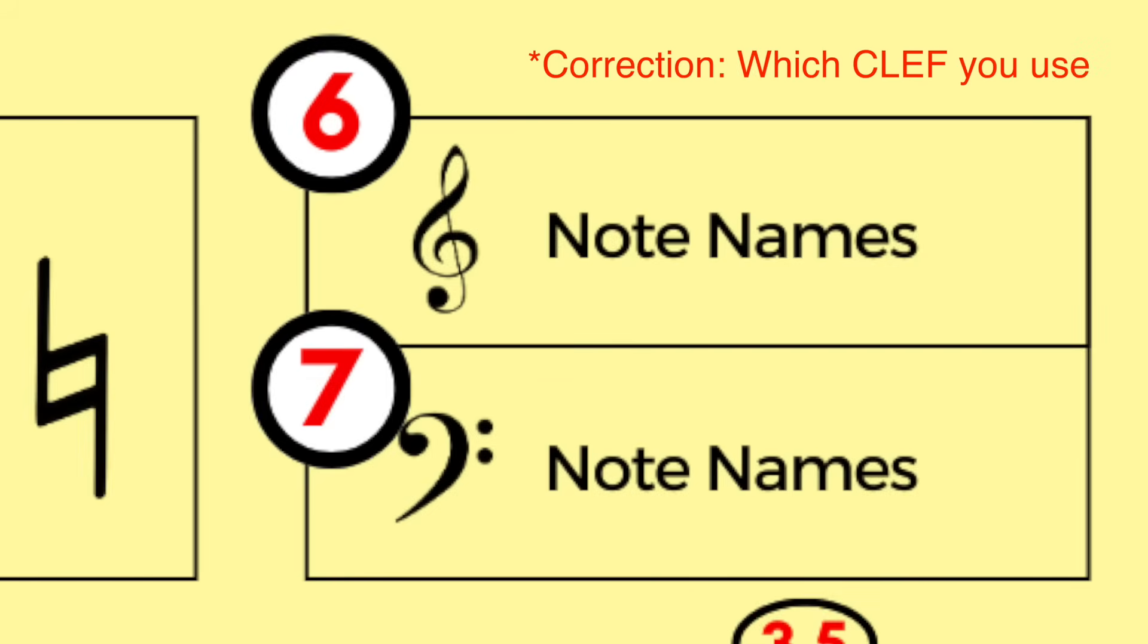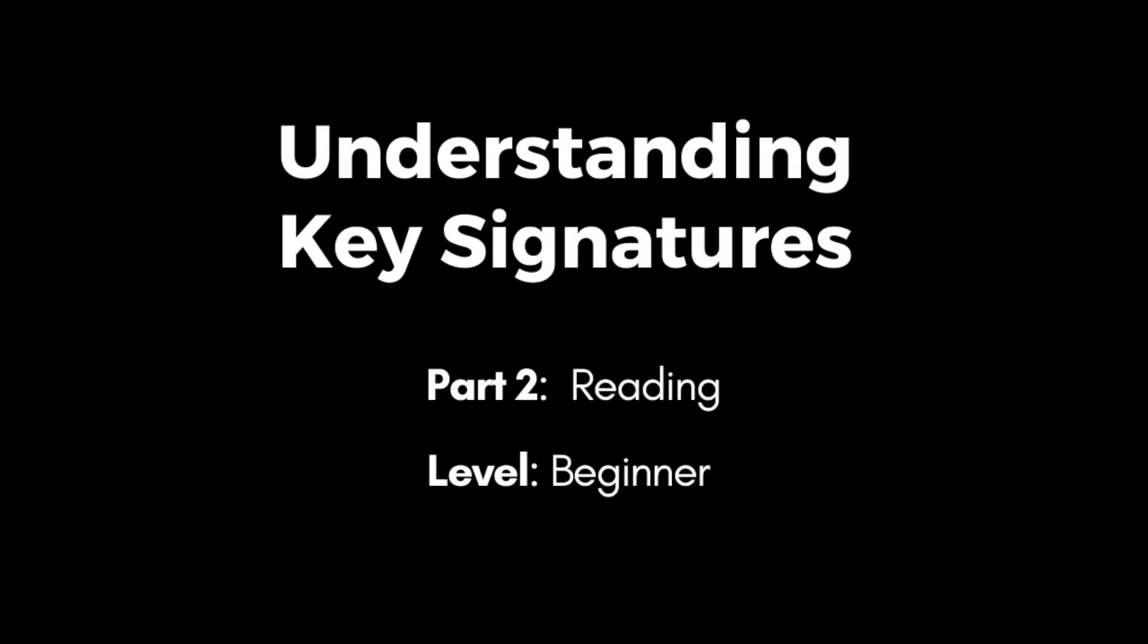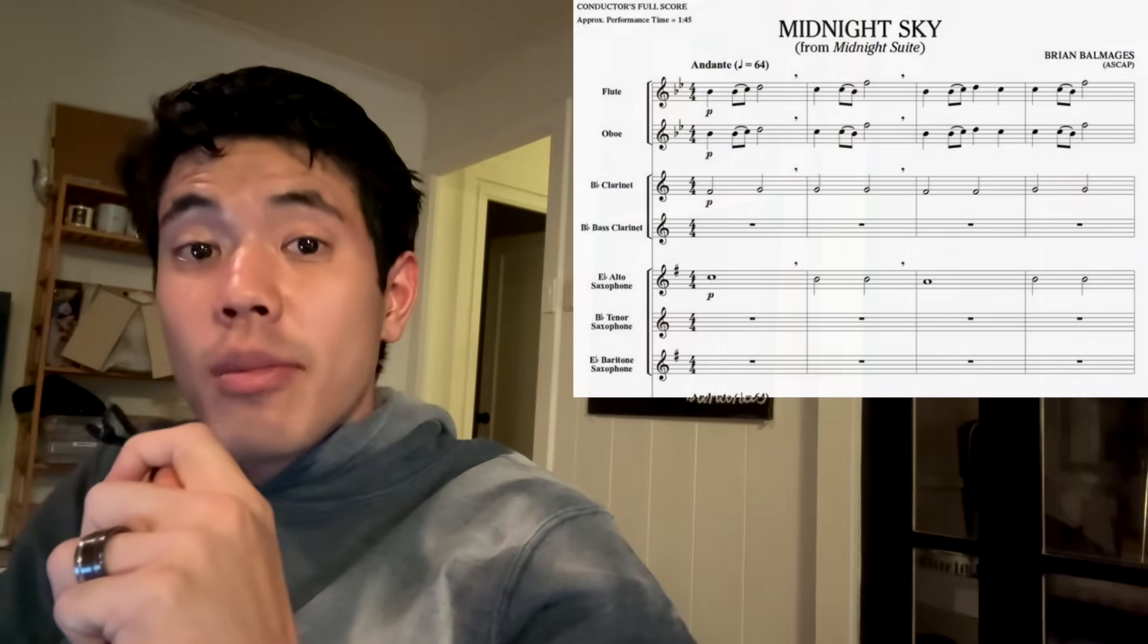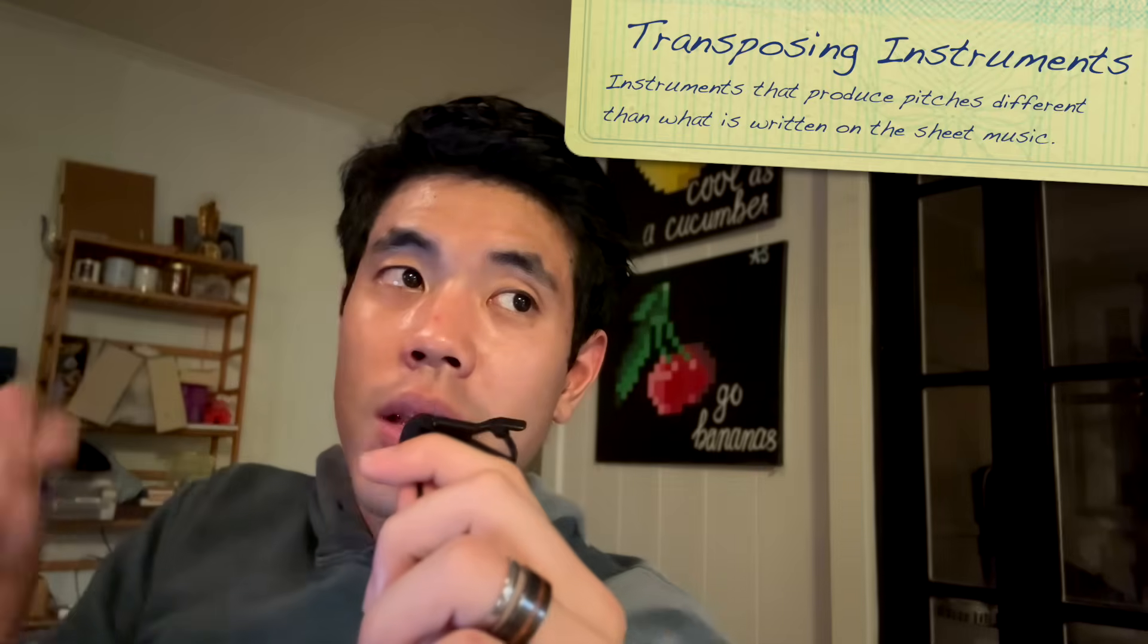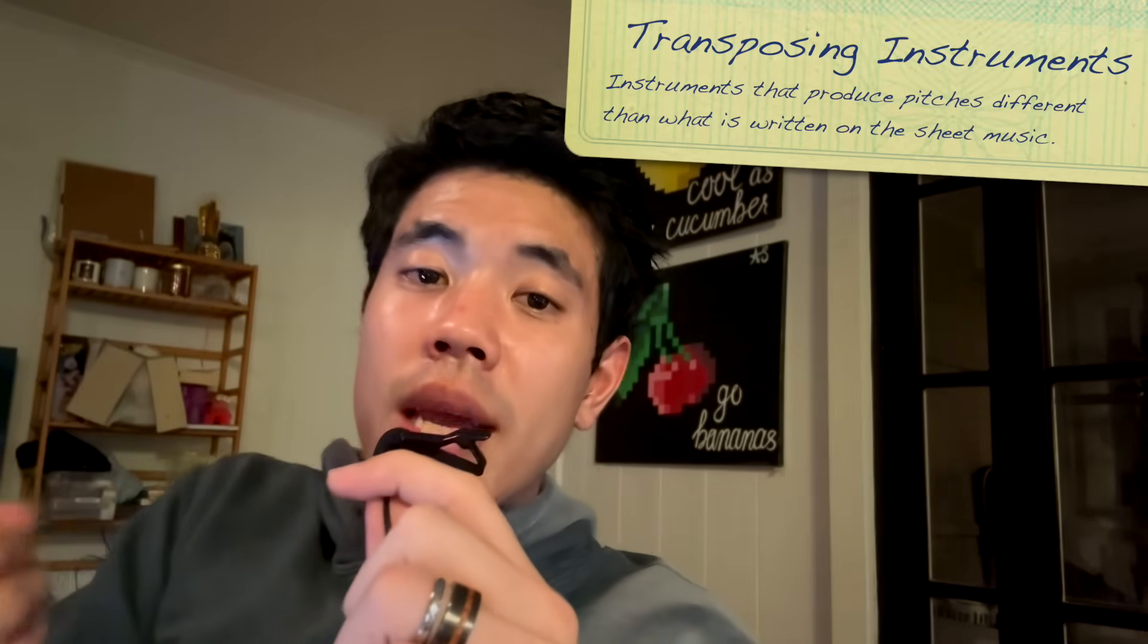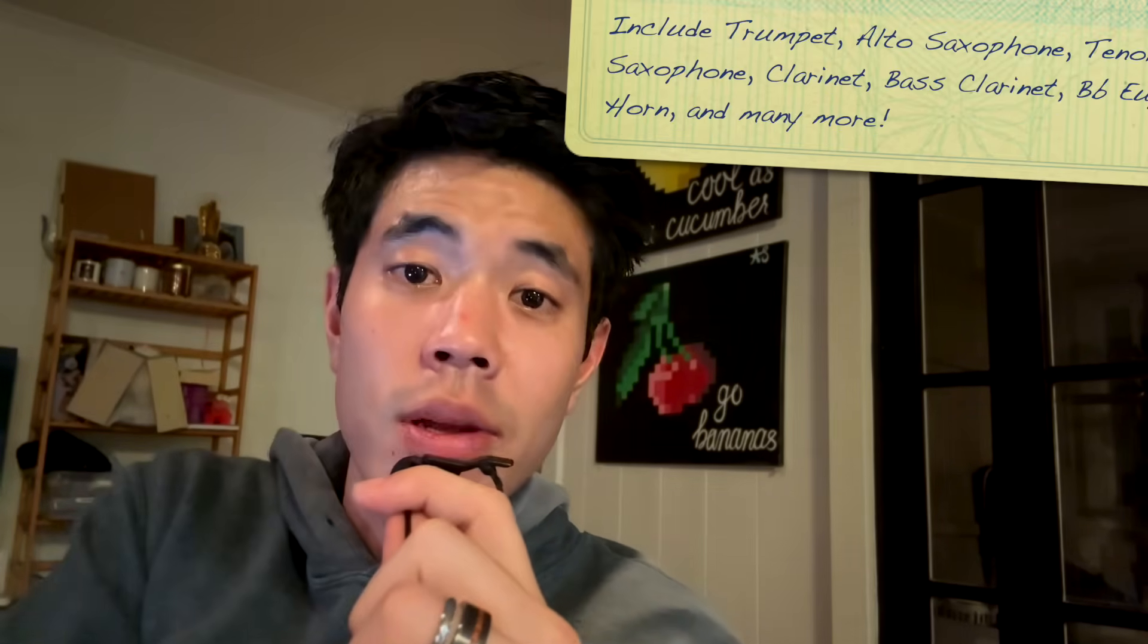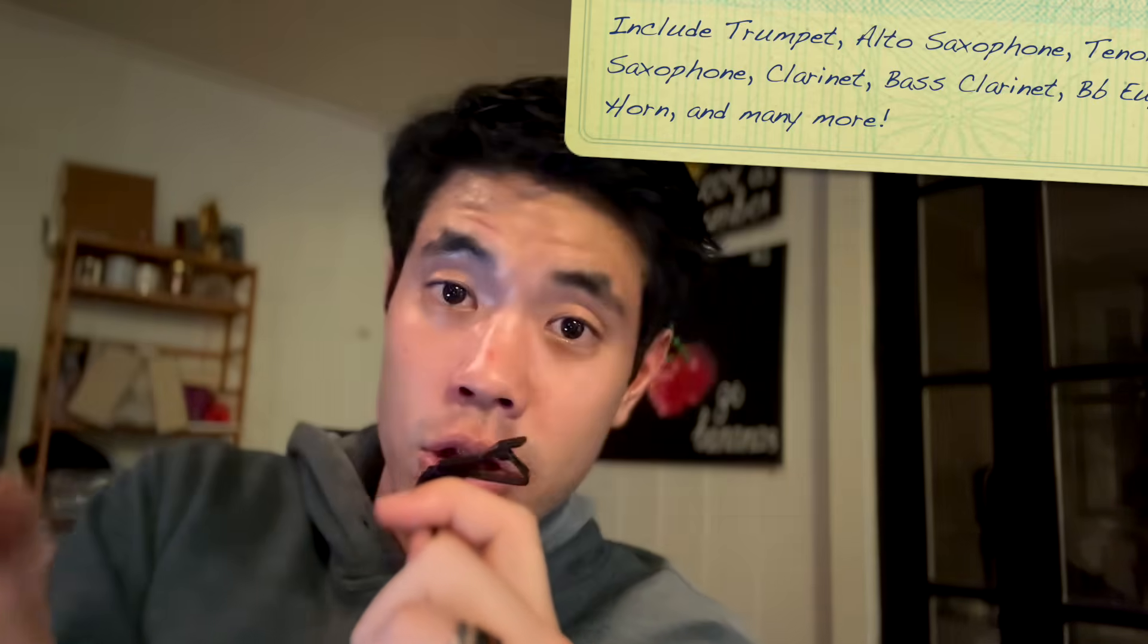So I teach a high school intro band class, and every year I give the kids this one piece called Midnight Sky by Brian Balmages. Now this piece is in B flat major, which looks like this. However, some of the kids, depending on what instruments they're playing, might actually see this key signature, or this one, or this one. And that's because some instruments in the band, like trumpet or alto saxophone, are transposing instruments, which essentially means that these performers are reading sheet music, they're making music, but the notes that are coming out of their instruments are not actually the same notes that are on the page. Why is this? That's a topic for another video. But what does this mean for a beginning musician?